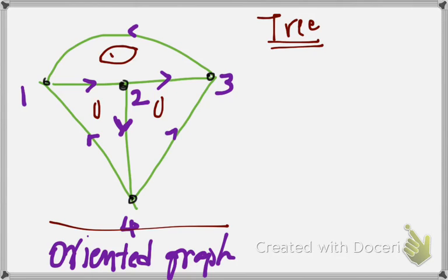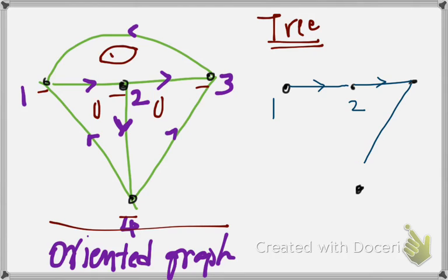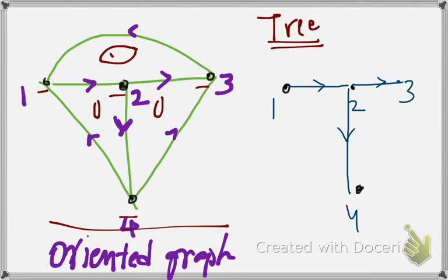Also remember that the number of nodes — 1, 2, 3, 4 — the number of nodes has to remain the same. So let me mark the nodes for my tree: 1, 2, 3, and 4. These are my nodes. Now I'll connect these nodes as given in the oriented graph itself. I'm connecting 1 and 2, the direction remains the same. This is 4 and this is 3. So this is a tree drawn from the oriented graph.